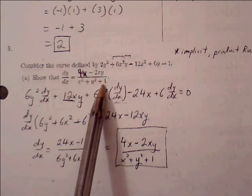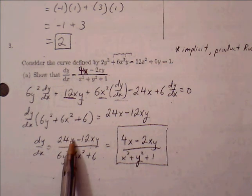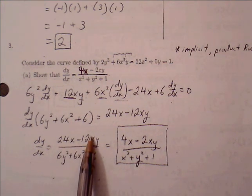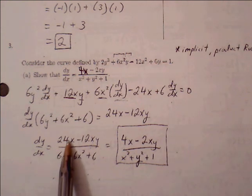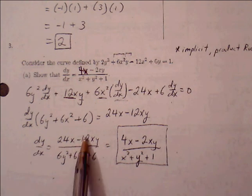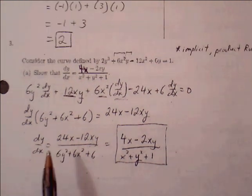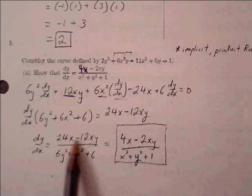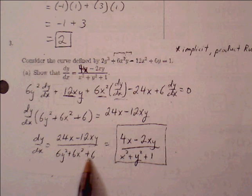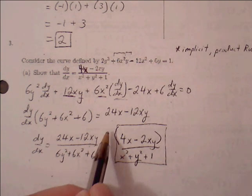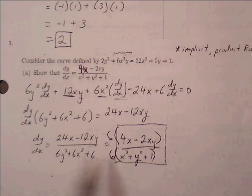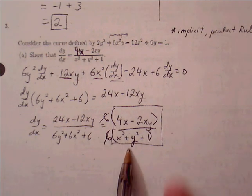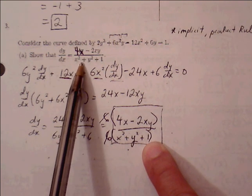We're getting close to the target expression, but these numbers are larger, so we can factor further. If we factor a 6 out of every term in both the numerator and denominator, the numerator becomes 4x − 2xy and the denominator becomes y² + x² + 1. The 6 cancels top and bottom, leaving dy/dx = (4x − 2xy) / (x² + y² + 1), which matches what the problem asked us to show.